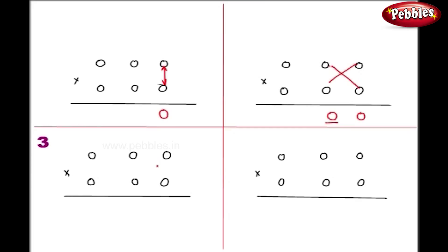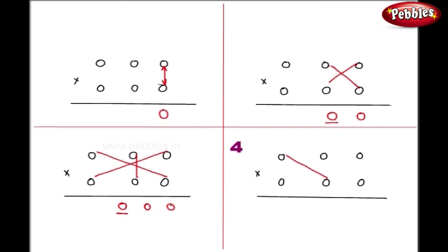In step number 3, we have to cross multiply column 3 and column 1, and to the addition of their product we should add the multiplication of column number 2 numbers, and we will write their result here. In step number 4, we should cross multiply column 2 and column 3 and write their product here.